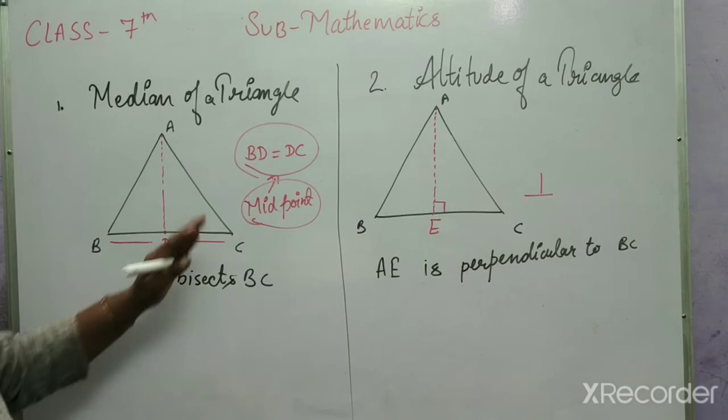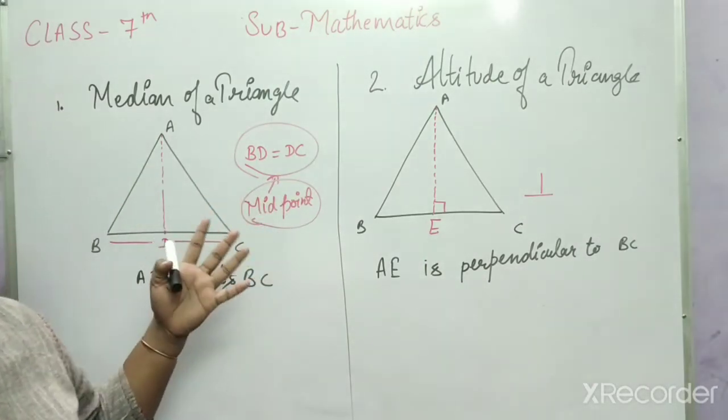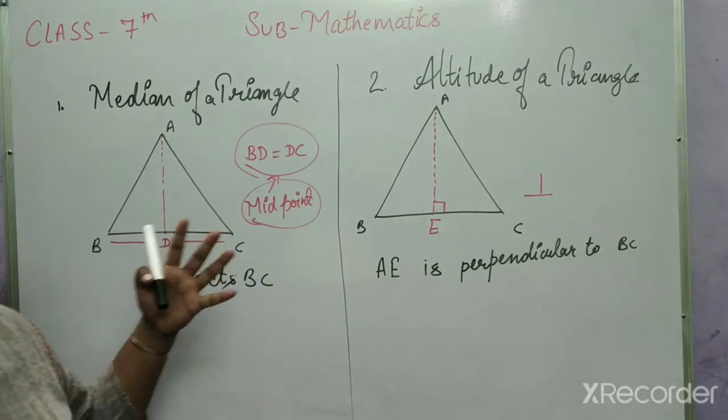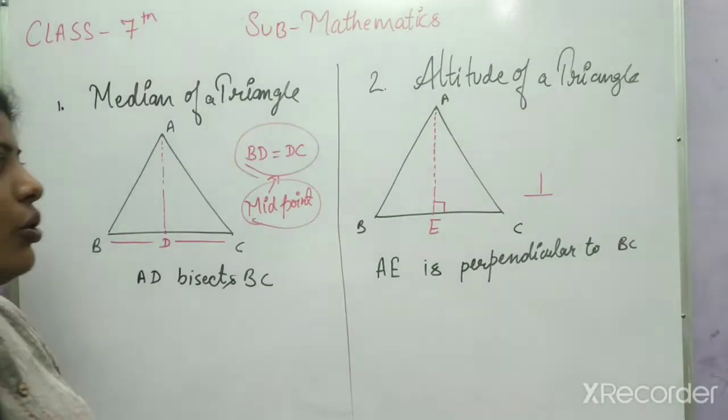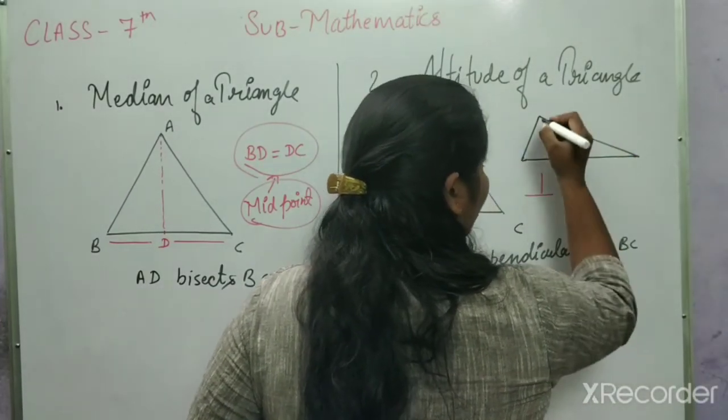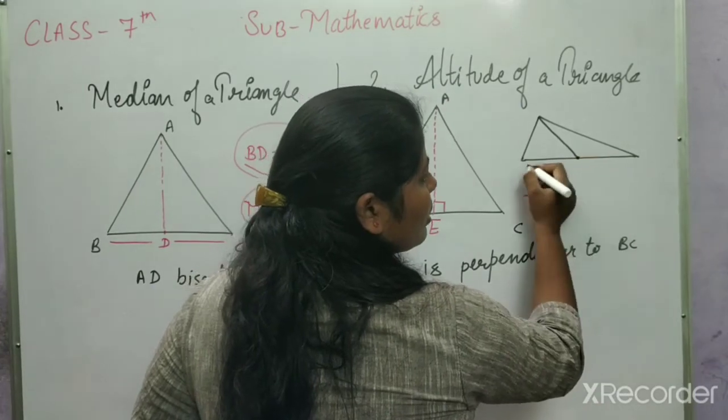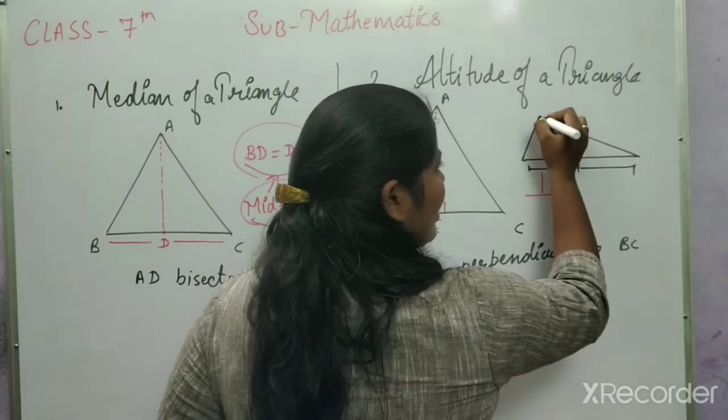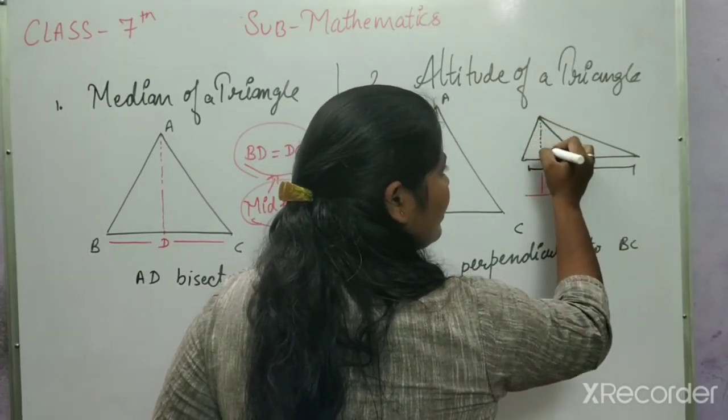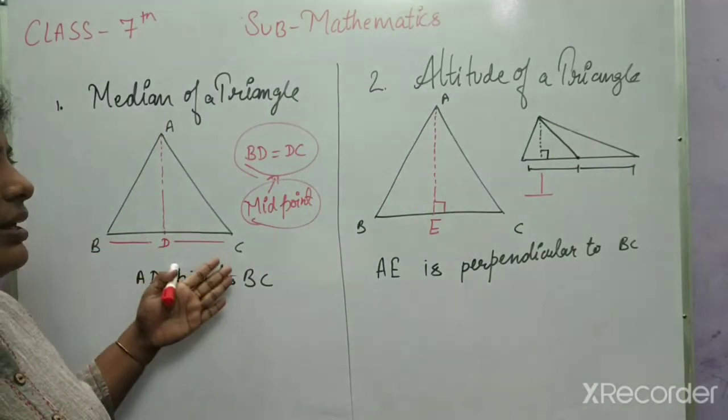I think you will understand the difference between median and altitude. I will write their definitions. First I will explain which triangles are different types. Median will be here and altitude will be here.